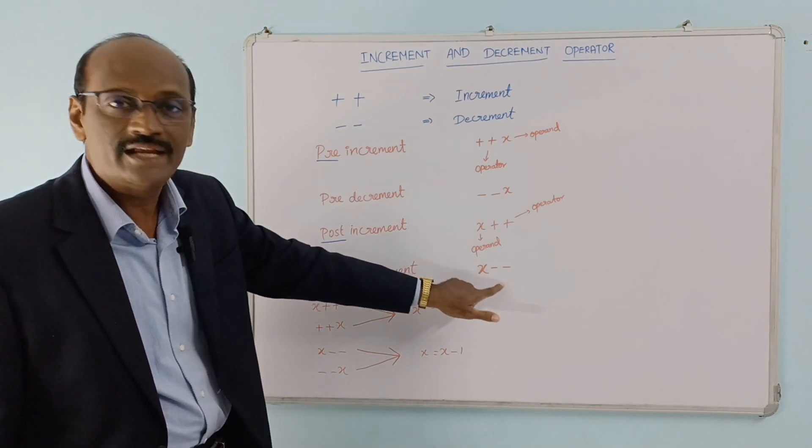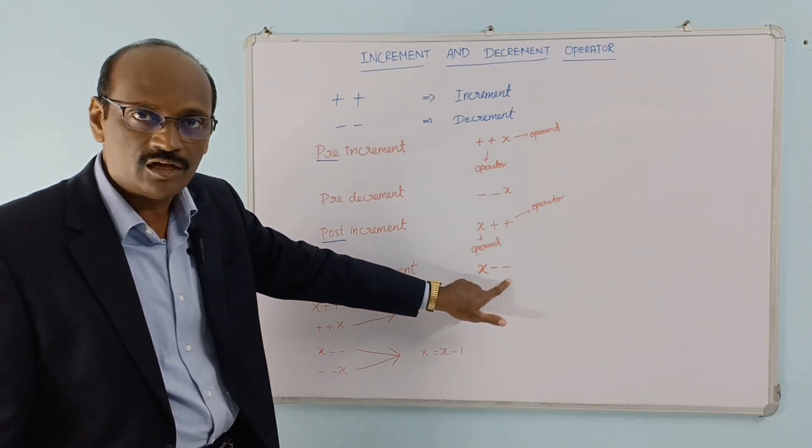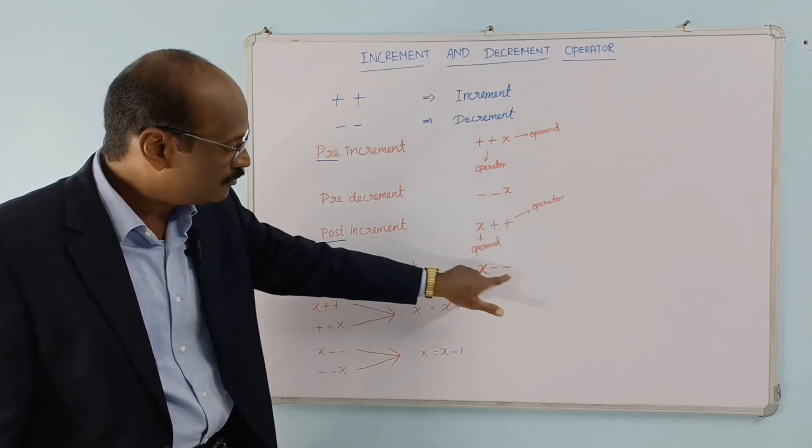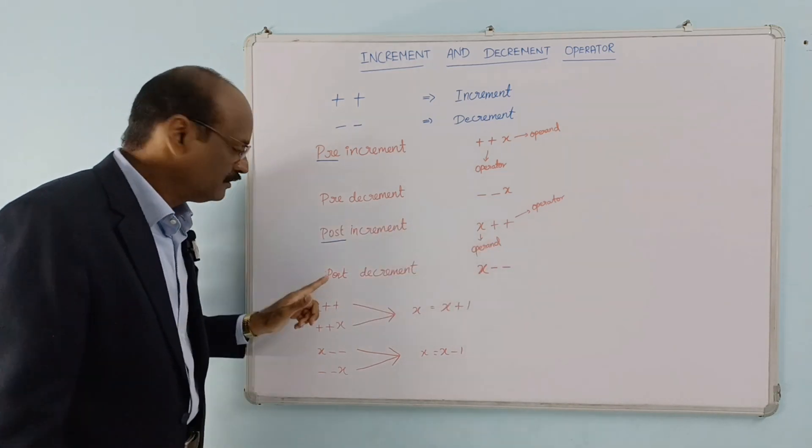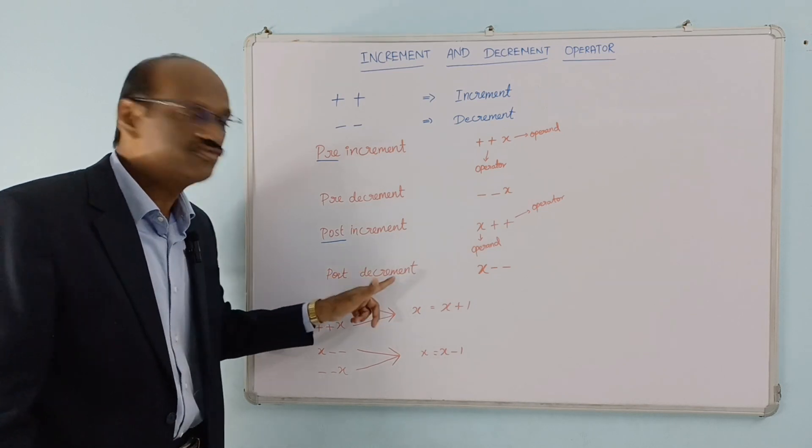For post-decrement, we write x--, where the operand comes first followed by the decrement operator. This is the naming convention for post-decrement.